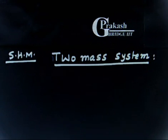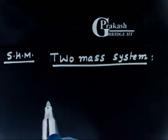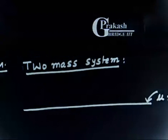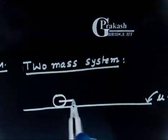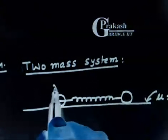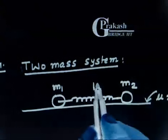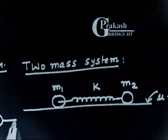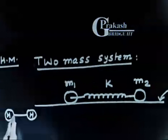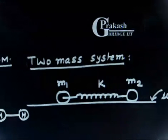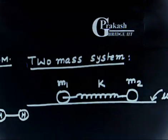Let us discuss this problem — a two-mass system on a frictionless horizontal surface (μ = 0). There are two masses connected by a spring with spring constant k, something like a hydrogen molecule H2. One hydrogen atom is attached to another via a spring — this is an idealization of the H2 molecule. So two masses m1 and m2 are connected by a massless spring of spring constant k.